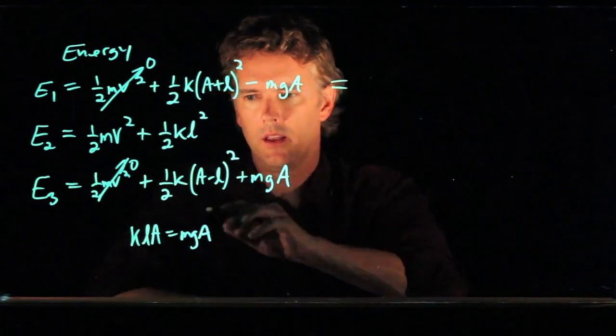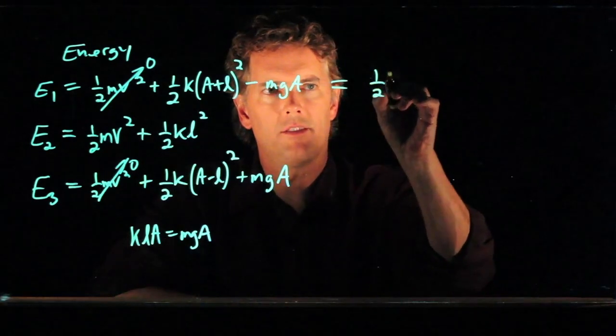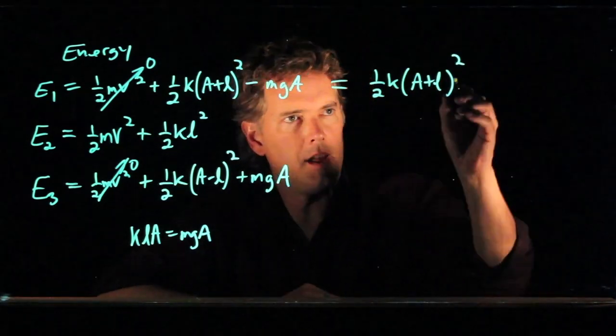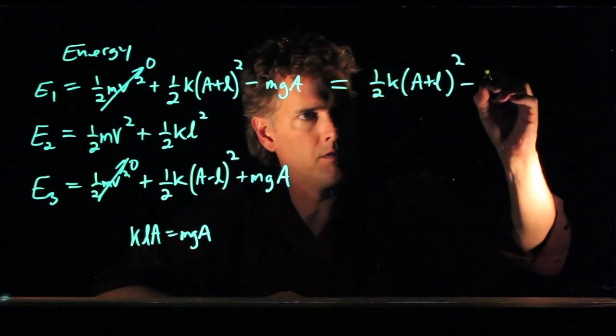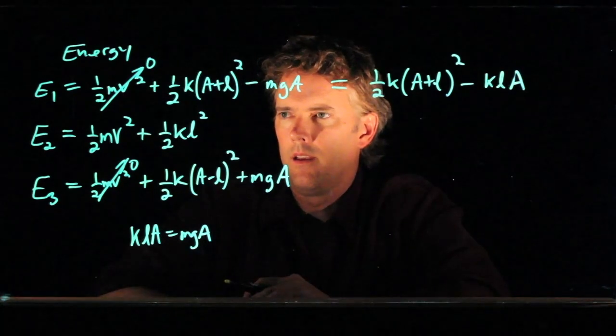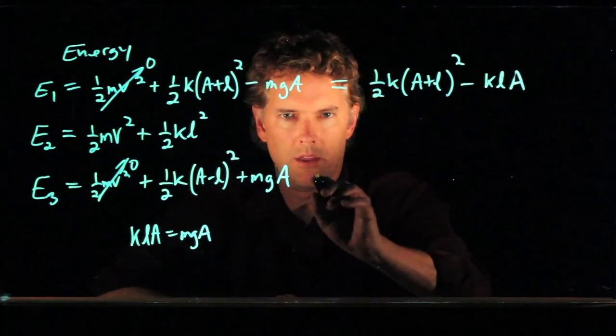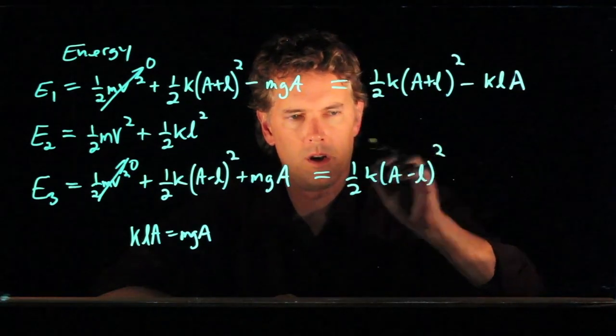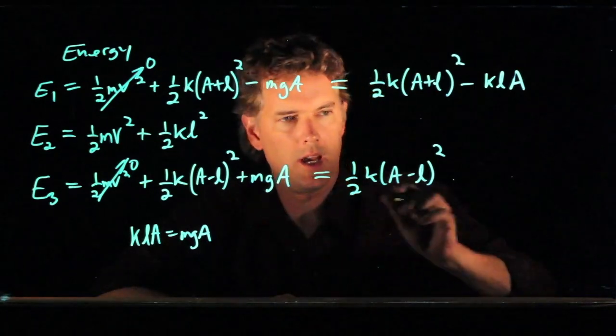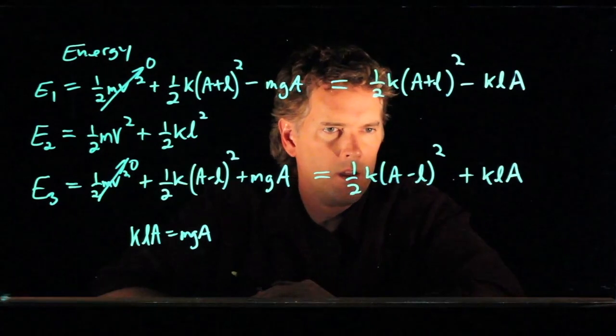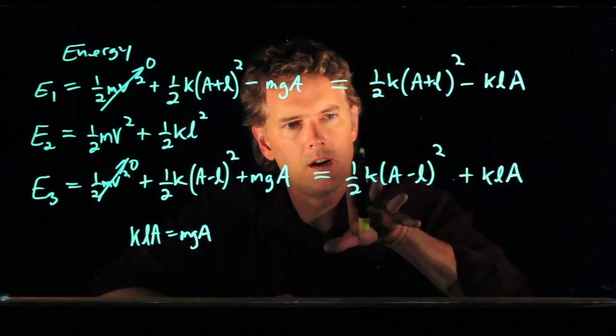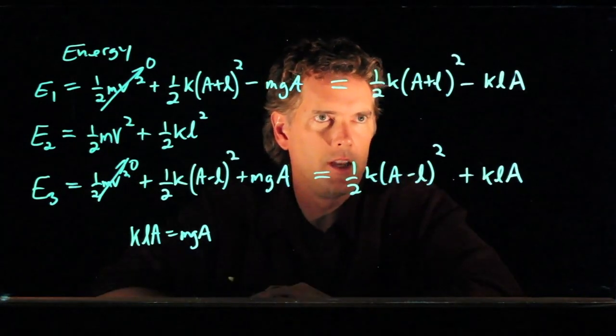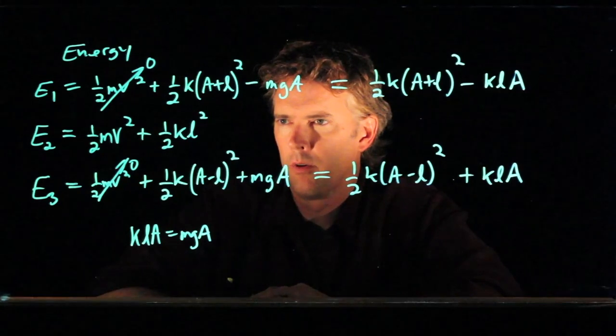Okay, so let's put in these terms here. So we have one-half K(A+L) squared minus MGA. But MGA we could write as this, KLA. E2, we'll leave that alone for a second. E3 becomes what? One-half K(A-L) squared. And then we have plus MGA, which is plus KLA. So now we have all those energies in terms of the spring constant K, the rest length L, and how far we stretched it, A. And now let's see if we can solve this thing for velocity.